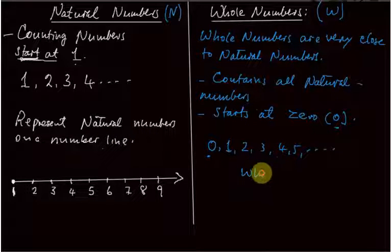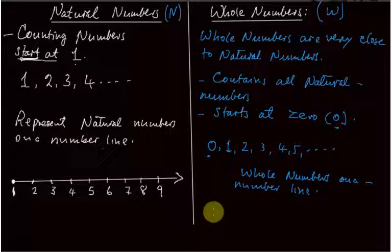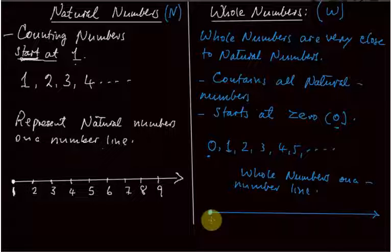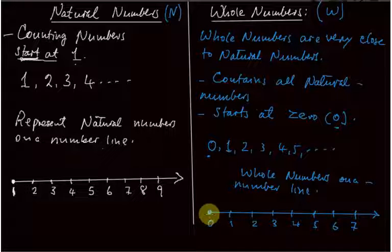Now let us represent whole numbers on a number line. We start from zero, and things look just like the natural number line. The starting point is zero, then one, two, three, four, five, six, seven, and so on endlessly.